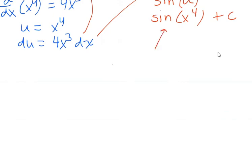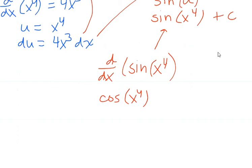If you want to check, we could always just take the derivative of sine x to the fourth. So we have to use a chain rule here. So the derivative of the outside would be cosine x to the fourth. So we keep the inside the same, take the derivative of the outside function.